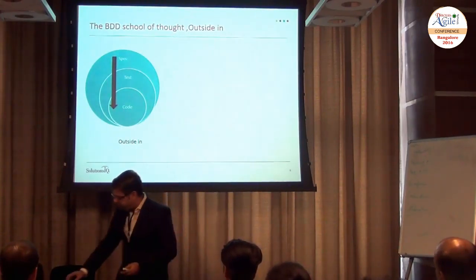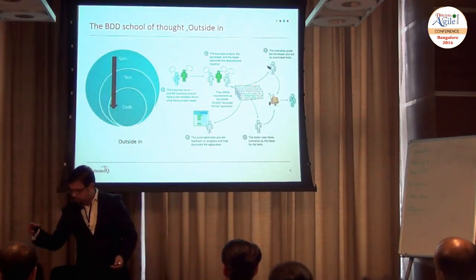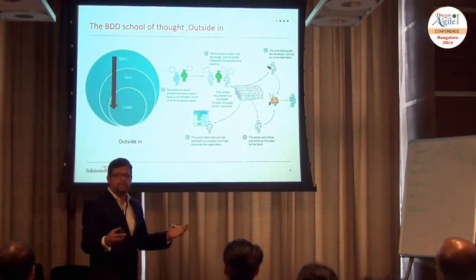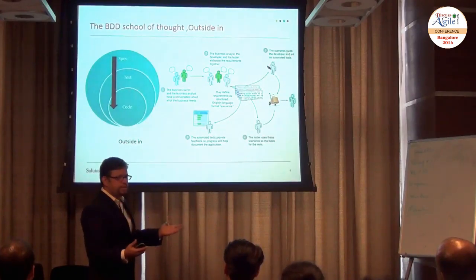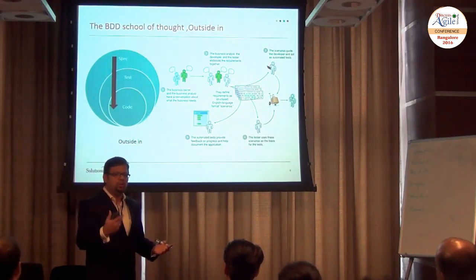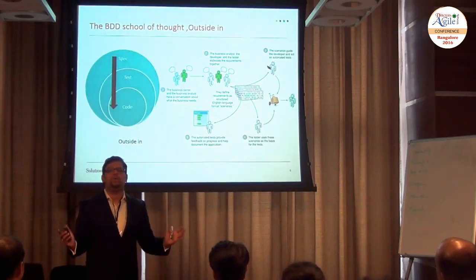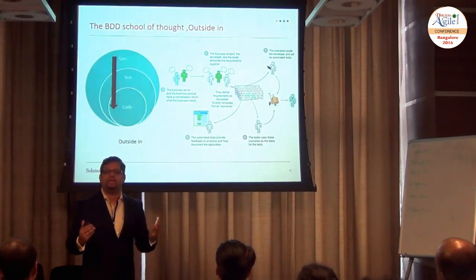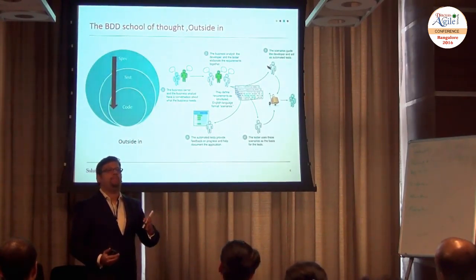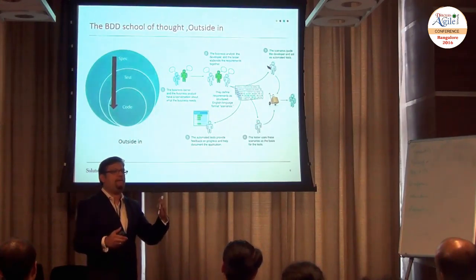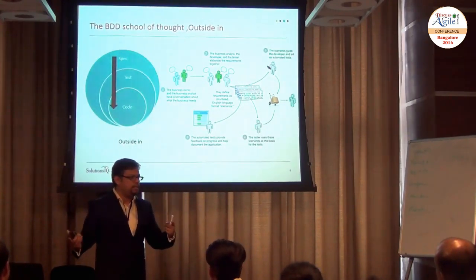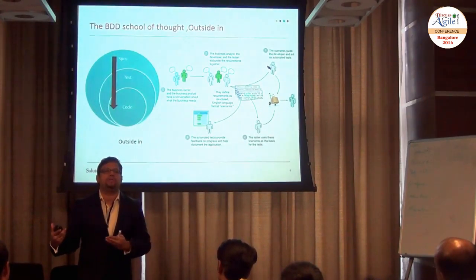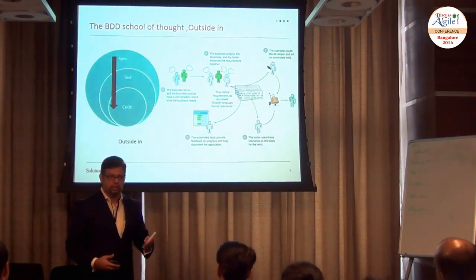This is how it works out. The business owner and business analysts have a conversation about what the business needs, and the BA presents it to the entire team - which includes the QA, which includes the production people. Anybody who can contribute towards scenario identification is brought in and they have conversations. What if this feature is there? You can have happy paths, sad paths, exceptional paths. These conversations are captured and they become your scenarios.